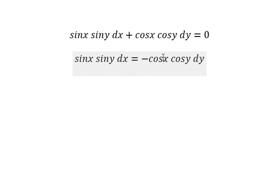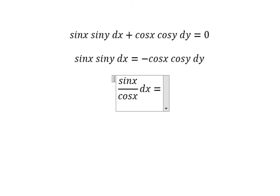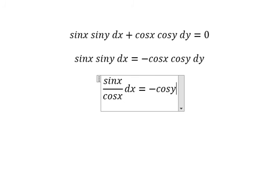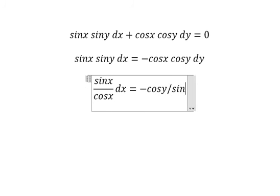We divide both sides by cosine x and sine y. So you get sine x over cosine x dx equals negative cosine y over sine y dy.